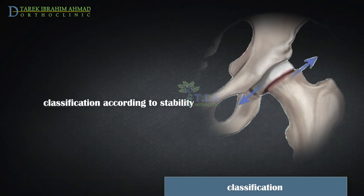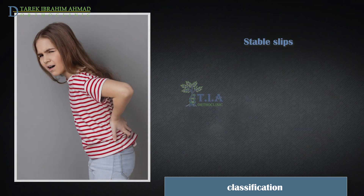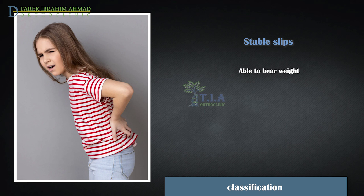SCFE has also been classified according to biomechanical stability as stable or unstable. Stable slips are defined as those in which walking and weight-bearing are possible with or without crutches. Most cases of SCFE are stable slips. Nevertheless, patients with stable slips should be made non-weight-bearing until orthopedic consultation and treatment have occurred.